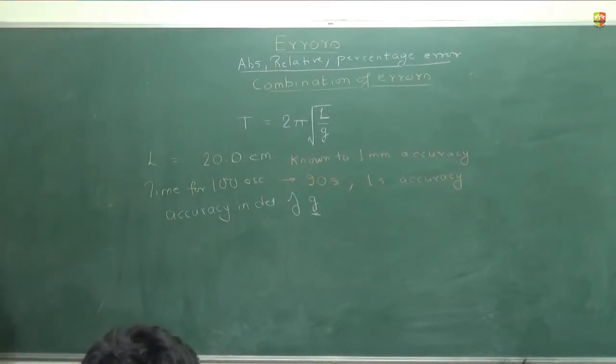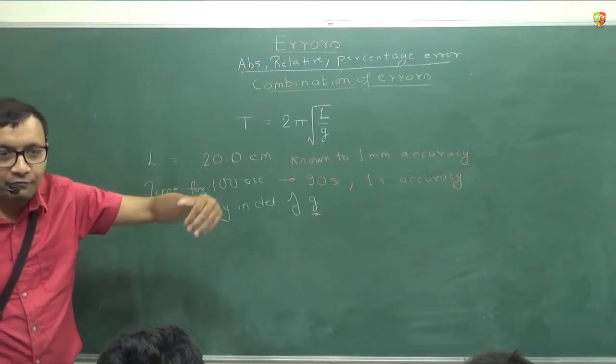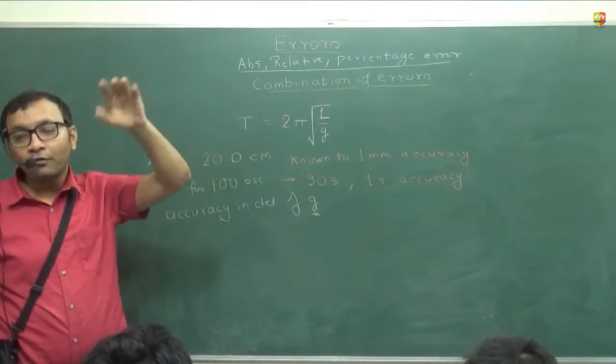The hint is the formula is for one oscillation. And the formula is for time period. Pi is pi, but pi square is 10. Remember this, pi square is 10, it helps. But the error in pi is 0. It's a constant. You can tell me percentage error or any error, whatever you call.